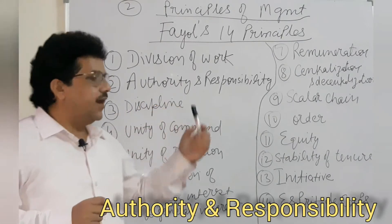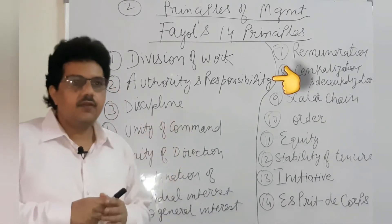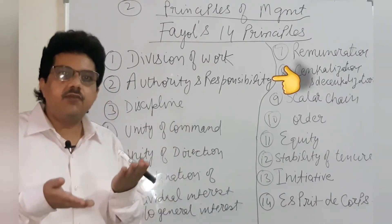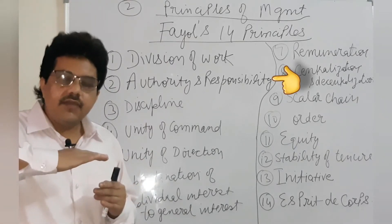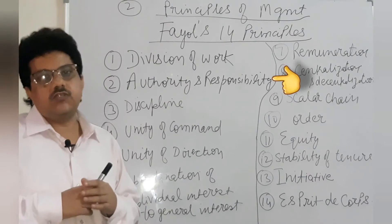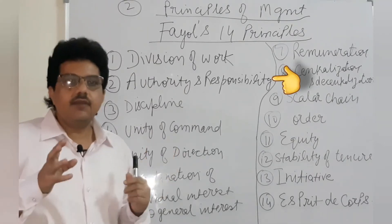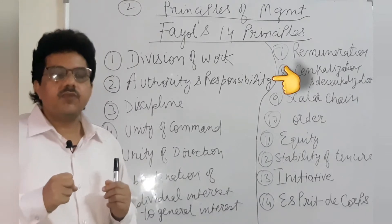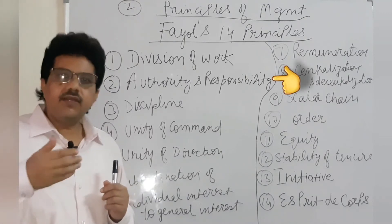Next is Authority and Responsibility — a very important principle. It is said that authority and responsibility go hand in hand, and there has to be a balance between authority and responsibility. Authority means when you are given a power that you can use.